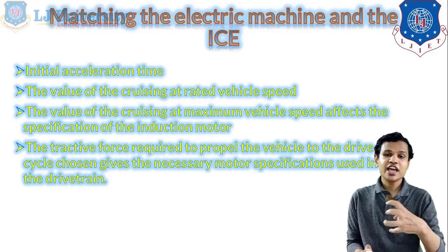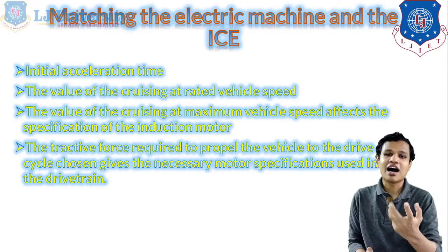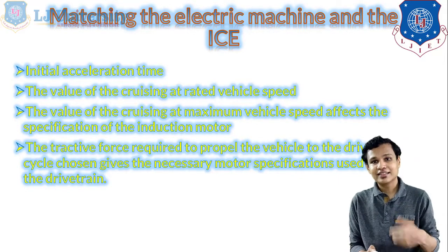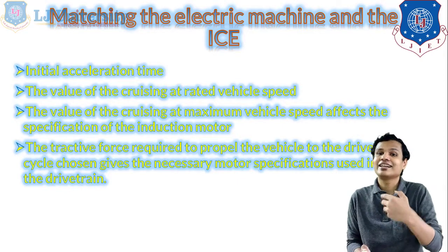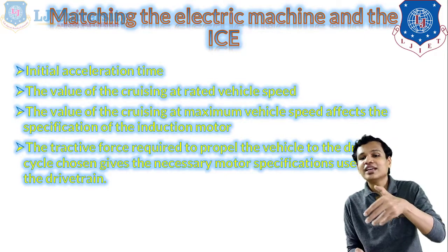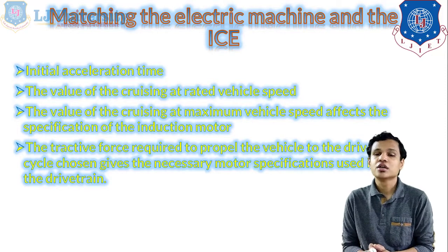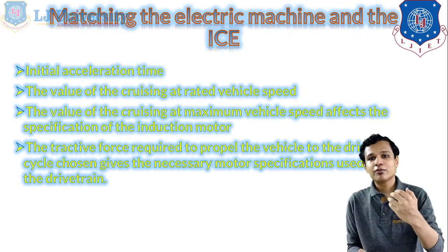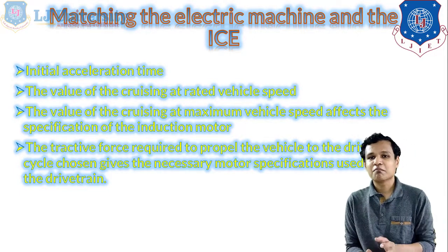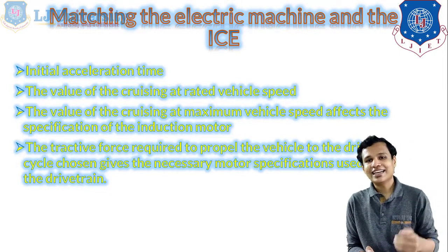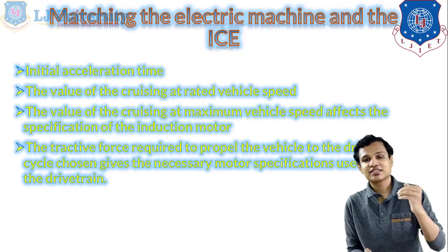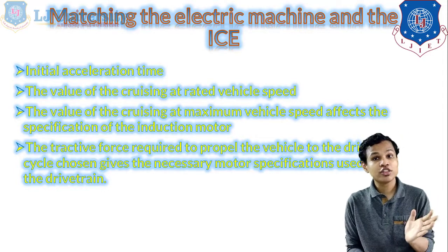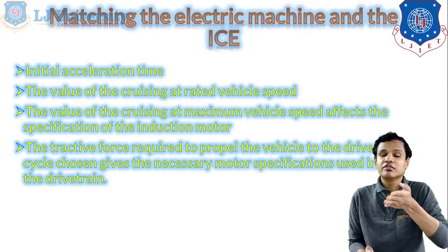Next we consider how to match the electric machine and the IC engine in hybrid vehicles. The factors to consider are: first, the initial acceleration time — at that point both machines will be used together. The cruising speed at the rated vehicle speed and the cruising at maximum vehicle speed will affect the specification of the induction motor. The tractive force required to drive the selected drive cycle gives the necessary motor specification used in the drivetrain.